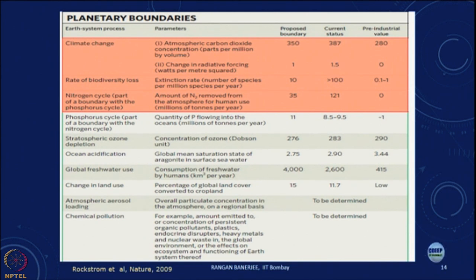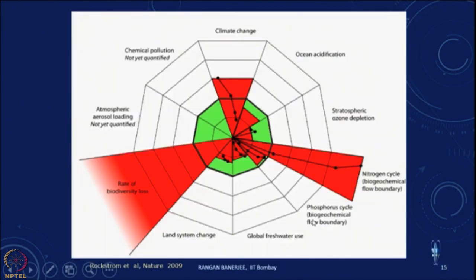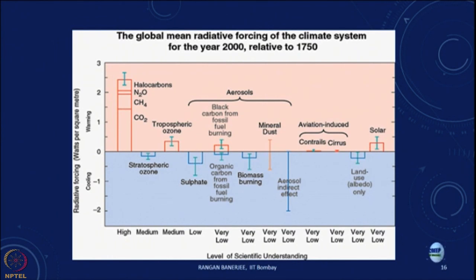For instance, for climate change the pre-industrial CO2 value is 280 parts per million by volume, the proposed boundary is 350 parts per million by volume, and the current status has gone up beyond that. Looking at the graph, we have exceeded the limit on the rate of biodiversity loss, the nitrogen cycle, and the climate change cycle. We will discuss the climate change cycle in a little more detail.